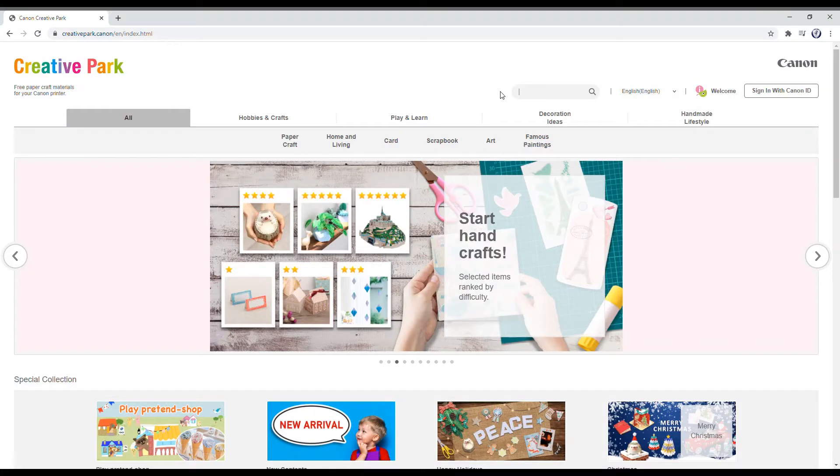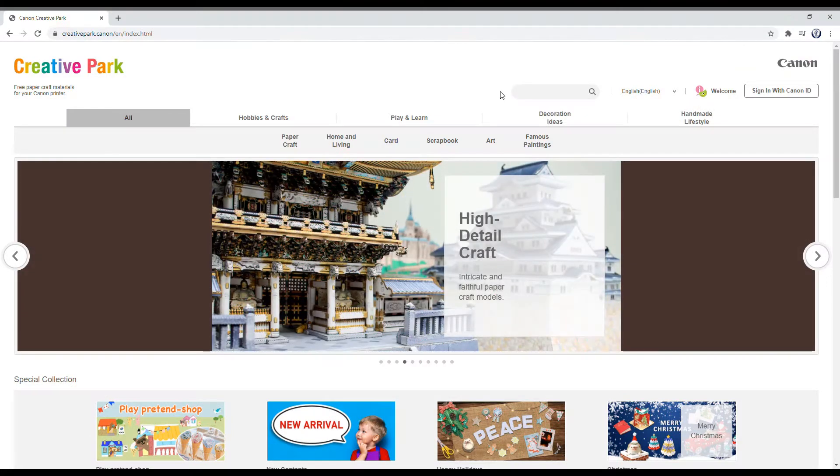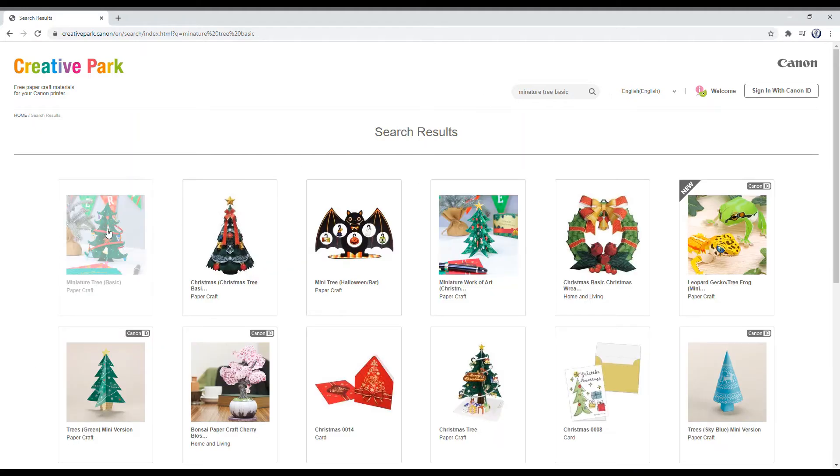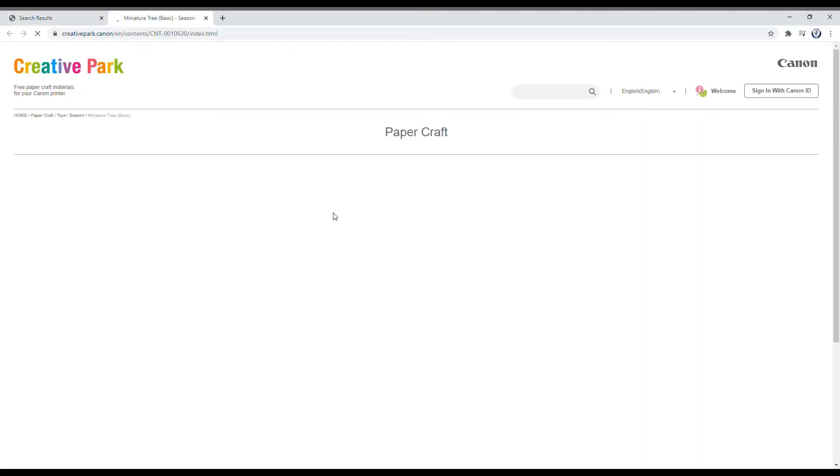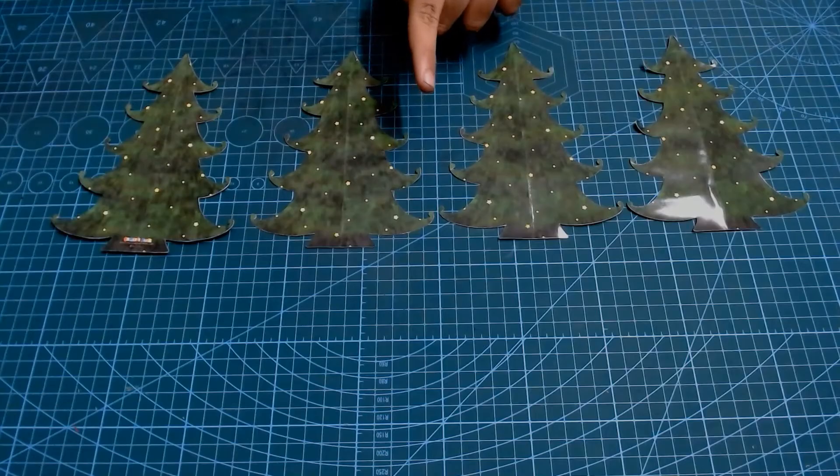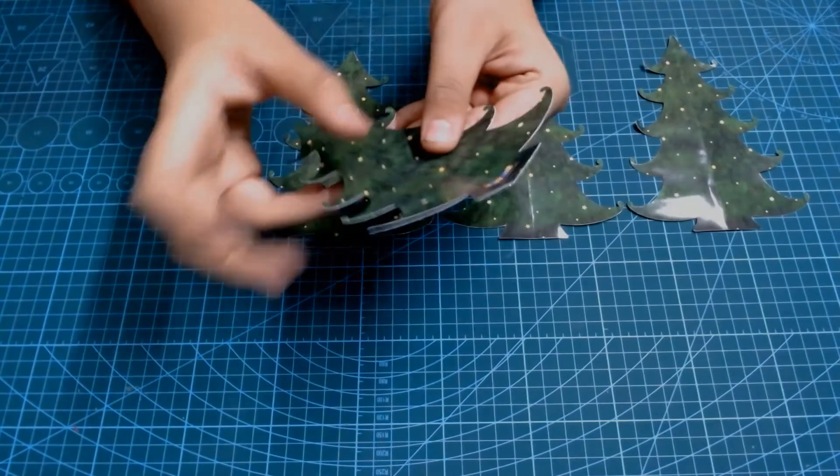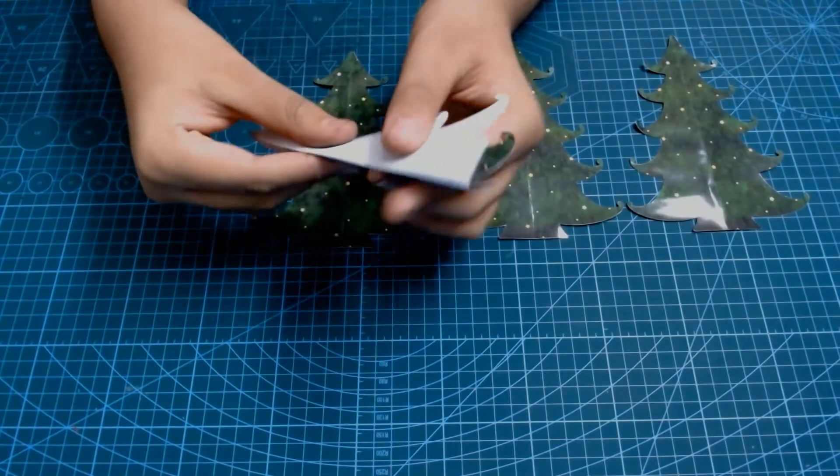Now, to find the template for our third model, we're going to look up miniature tree basic. Hit the enter button. We click the first result we see here. Press the grey download button to get the template. Now, the first thing we're going to have to do is take our tree and start folding it in half.